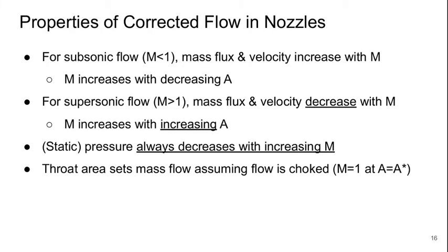Welcome to Part 3 of Lecture 2 of Aerospace Propulsion. The answers to the question that we ended off the last part with are that for subsonic flow, if the Mach number is less than 1, the mass flux and the velocity increase with Mach number.